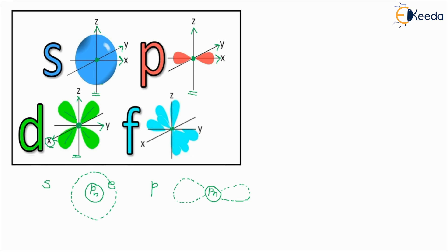Finally, moving on to the F orbital. It's very difficult to actually have an F orbital on paper. Again we have X axis, Y axis, Z axis. If you look into the orbitals, this is how the orbitals are - it is not a very defined or definitive shape. The shapes have been changing. It's very difficult to actually spot them and create them in a 2D version. Some of them are coming out of the paper, some are going inside the paper. This is how the F orbital looks.